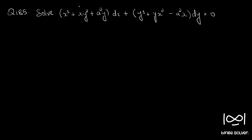Question number 185: solve x cube plus x y square plus a square y dx plus y cube plus y x square minus x square dy equal to 0. We will see which all terms can be easily integrated.